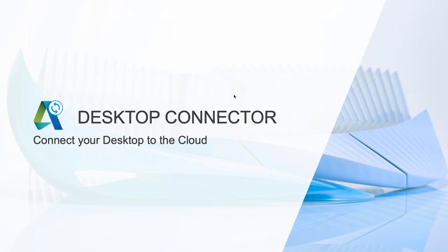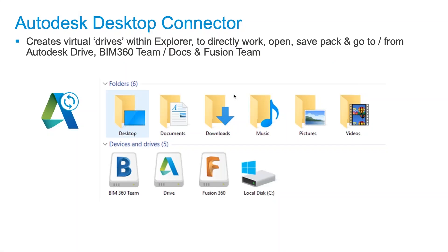That is the Desktop Connector. This is a technology — once you join up with a Fusion Team Hub, the Desktop Connector is a utility that installs, runs, and appears right down inside of your system tray. What this does is give you access from Windows Explorer to the cloud, much like OneDrive, Box, or Dropbox.